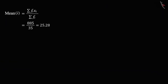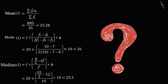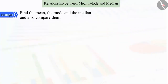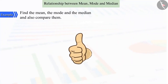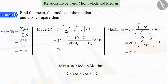Note and tell what are the similarities between the mean, the mode and the median. Looking at the values of these three, one can say that these are the nearest values to each other.